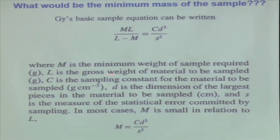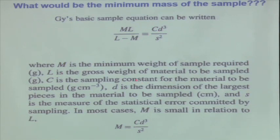The basic sample equation is: ML/(L-M) = CDQ/S², where M is the minimum weight of sample required in grams. L is the gross weight of material to be sampled — what is my population: is it 100 million tons, 100 tons, or 100 kg? C is the sampling constant for the material to be sampled, and D is the dimension of the largest pieces in the material to be sampled in centimeters.